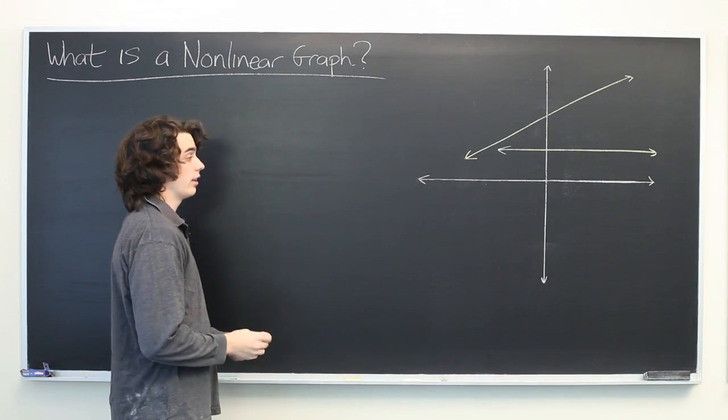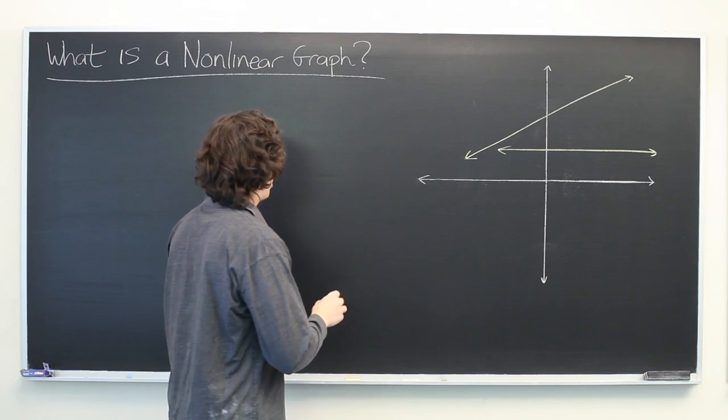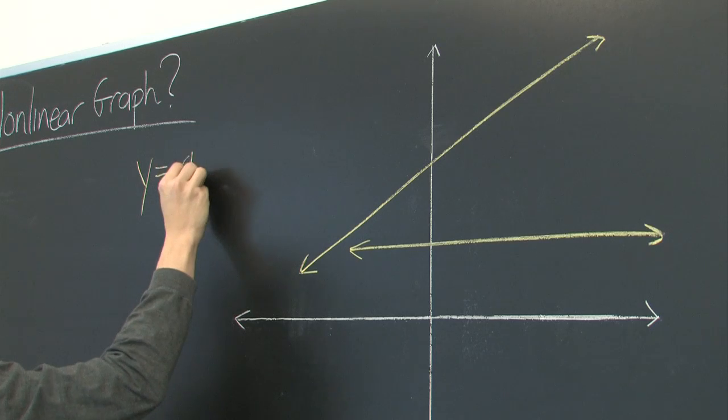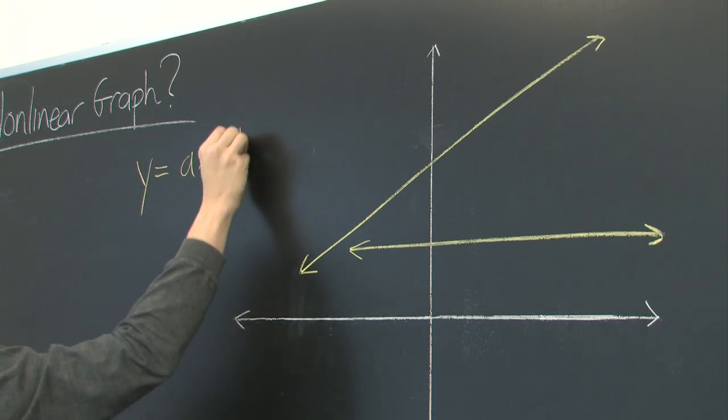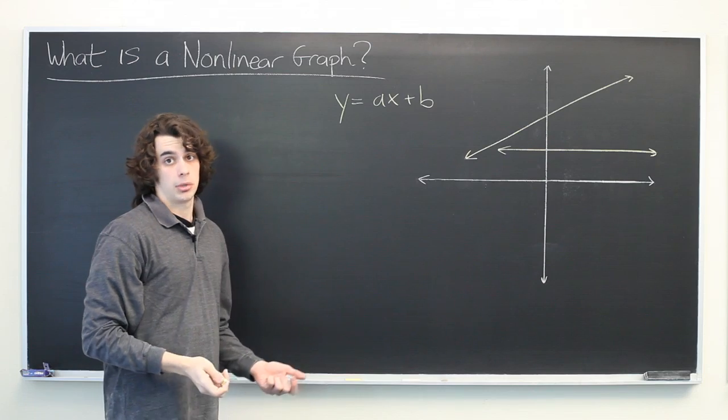Essentially, a linear graph is just a graph of a relationship between two variables in which the relationship is linear. Typically, you have the form y equals ax plus b, where a and b can be any constants, including zero.